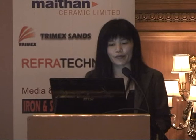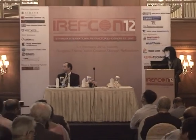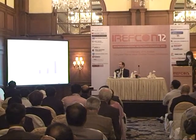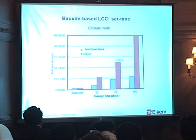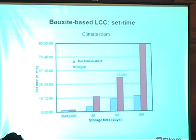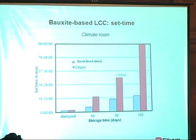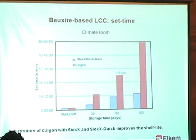Looking at setting time for the same system — premixes kept in the warehouse — in both cases the setting time gets extended, but the extension rate is different. The blue curve with SALPS and SALPS QUICK extends much more slowly than the one with Calcum. For mixes kept in the climate room at 70 to 80% relative humidity, after three months the samples with SALPS and SALPS QUICK are still okay — you can demould after one day. But for Calcum, it's completely destroyed. This confirms that substitution of Calcum with SALPS and SALPS QUICK improves the shelf life.